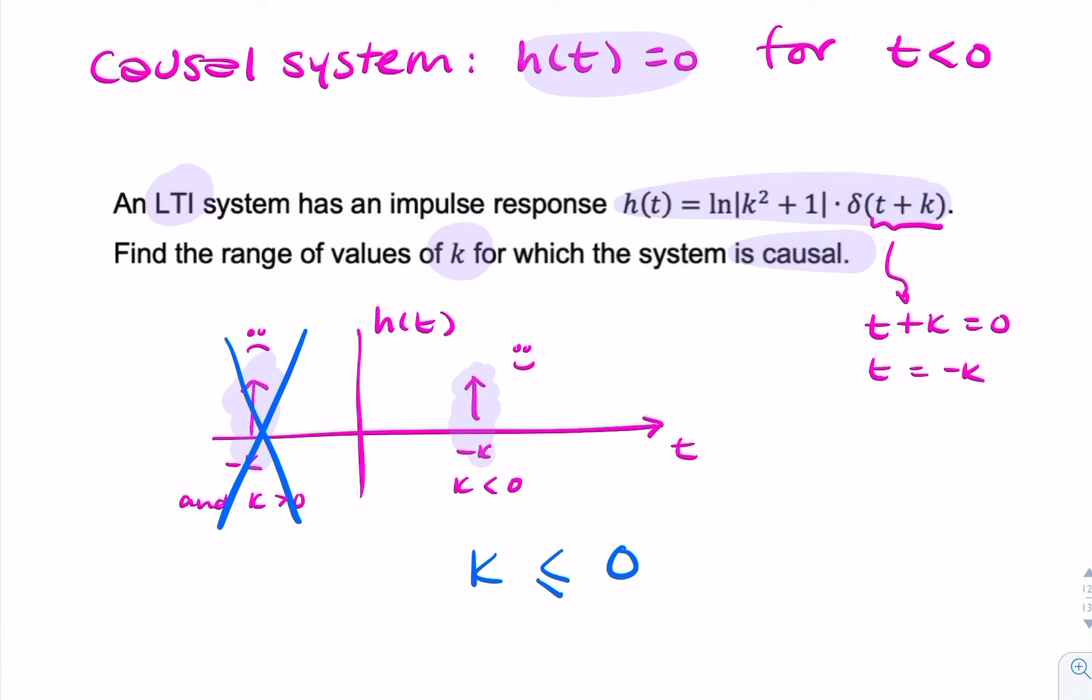So if k happened to be equal to zero, we would simply have an impulse at t equals zero, and that's fine. As long as h of t is zero for negative time, at t equals zero, it's okay to be non-zero.